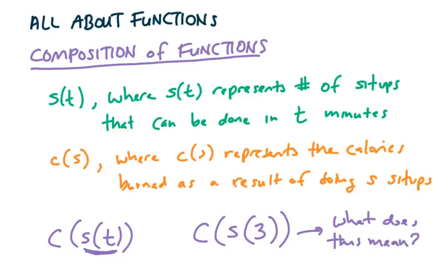Because this is a composition of functions. I know it's not really a mathematical example yet, but just conceptually, c(s(3)) would mean the number of calories burned in doing sit-ups for 3 minutes. So this 3 here is representative of time, t in minutes, so 3 minutes.